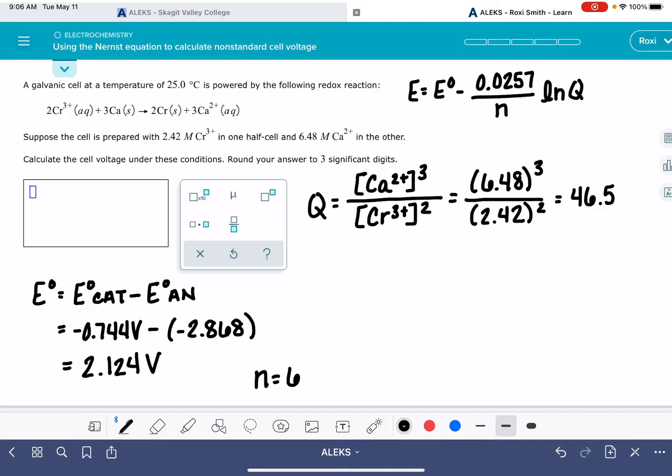This is a unitless number. So now we have everything that we need to solve for E. E standard, which is 2.124 volts minus 0.0257 over N, which we decided was 6, times the natural log of Q, which is 46.5.